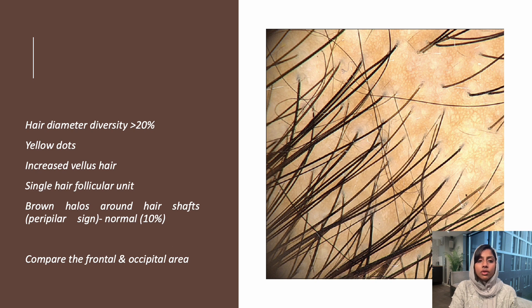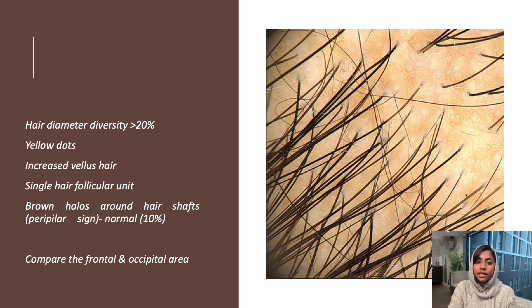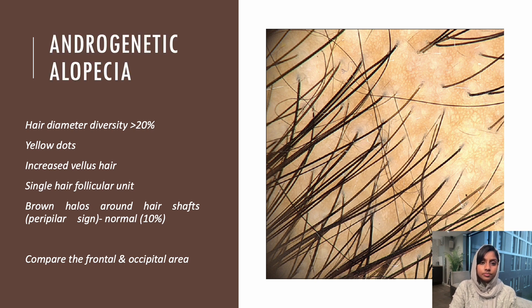One of the best ways to diagnose androgenetic alopecia is to compare the frontal or vertex area with the occipital area, because as we know the occipital area will be spared in androgenetic alopecia.